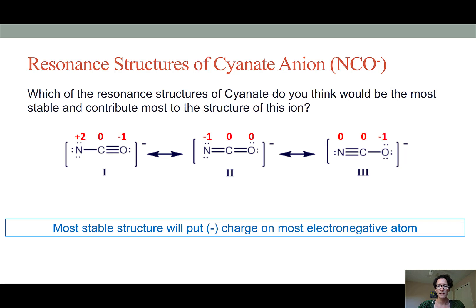As we can see, the structure number three on the far right puts the negative charge on the oxygen atom and leaves no net charge on either the carbon or the nitrogens. Therefore, the third resonance structure is going to be the most favored and contribute the most to the structure of cyanate.